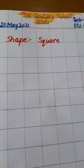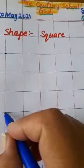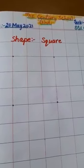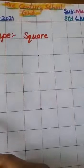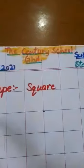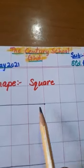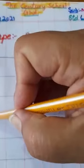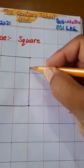Now we will draw shape square. First, we will make dots for the square: 1, 2, 3, 4. We will make 4 dots. Now we will join these dots like this: 1, 2, 3, 4.